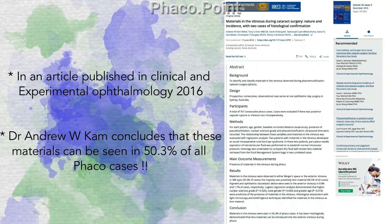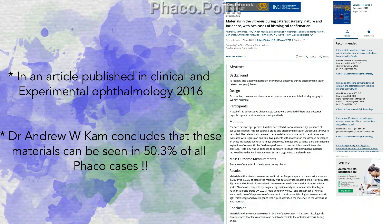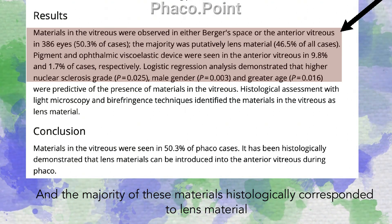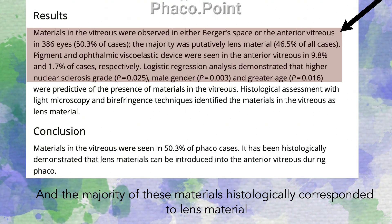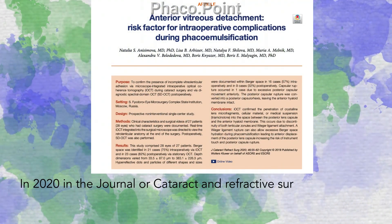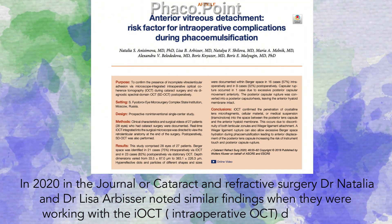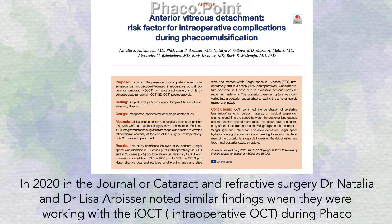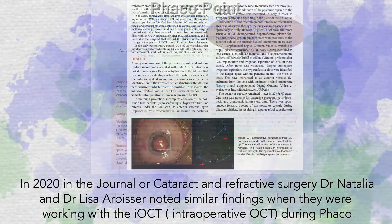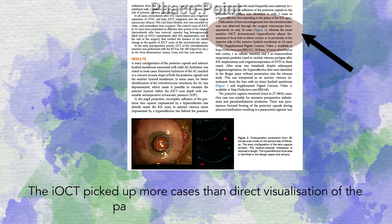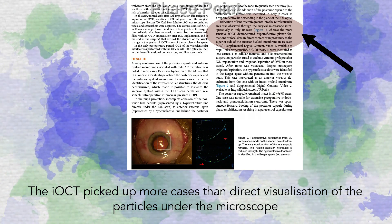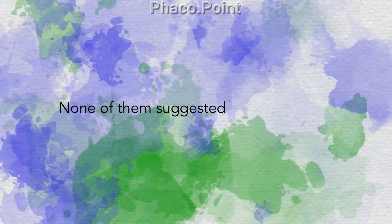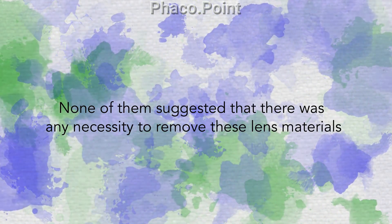In an article published in Clinical and Experimental Ophthalmology in 2016, Dr. Andrew W. Cam concludes that these materials can be seen in 50.3% of patients, and the majority of these materials histologically corresponds to lens material or lens matter. In 2020, in the Journal of Cataract and Refractive Surgery, Dr. Natalia and Dr. Lisa Arbisser noted similar findings when working with intraoperative OCT during phaco emulsification. They said that visible particles under the operating microscope were much less than what is actually seen on intraoperative OCT. Neither of them suggested any necessity to remove these fragments.